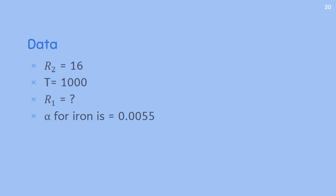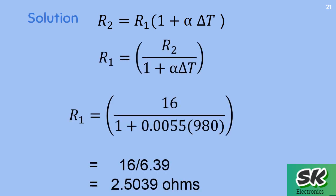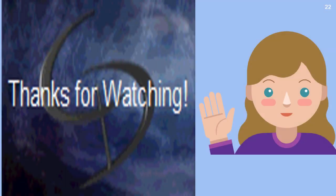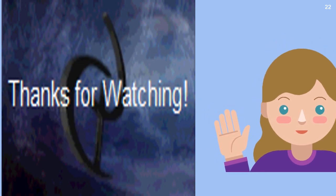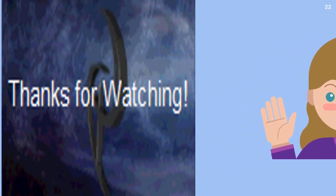The change in temperature delta t equals 1000 minus 20, which equals 980. Rearranging the equation to find the initial resistance and substituting the values, the initial resistance comes out to be 2.5039 ohms. That's all for today — hope you got a clear idea of what temperature coefficient of resistance is. Thank you so much for watching.